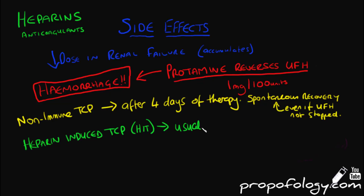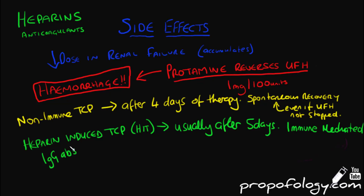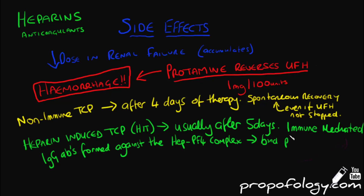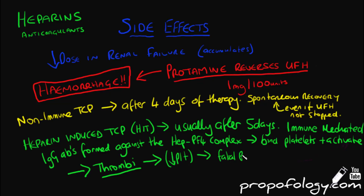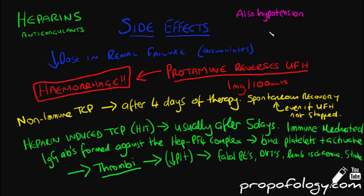In contrast, heparin-induced thrombocytopenia, or HIT, is very serious and usually occurs after five days of therapy, although previous heparin exposure can accelerate this course. It is an immune-mediated process where IgG antibodies are formed against the heparin and platelet factor IV complex. These antibodies bind platelets and activate them, causing thrombi to develop and propagate. This decreases the serum platelet count and has the potential to cause fatal PEs, DVTs, limb ischaemia, and even stroke. It can also cause bleeding as it uses up platelets and causes a coagulopathy.